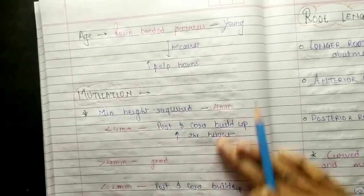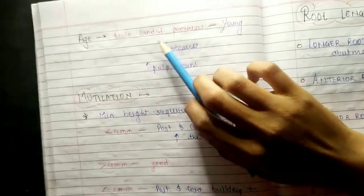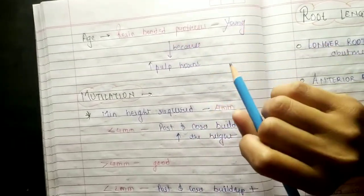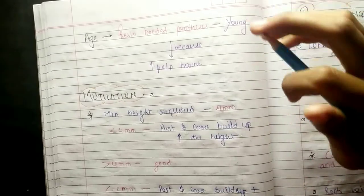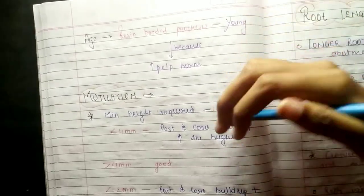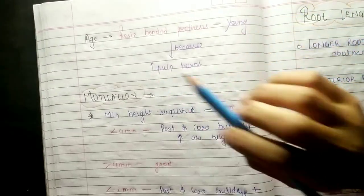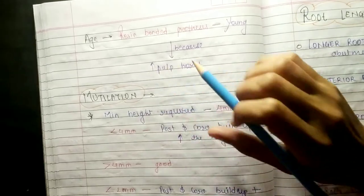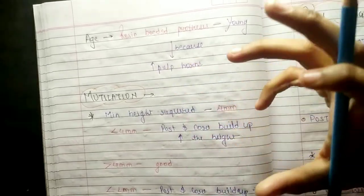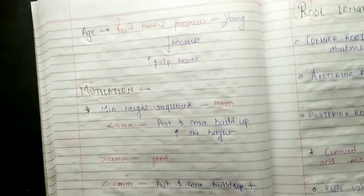Resin bonded prosthesis can be used in young patients because in young patients the pulp is large, which makes preparation for conventional FPD less suitable.